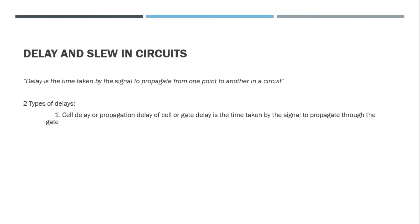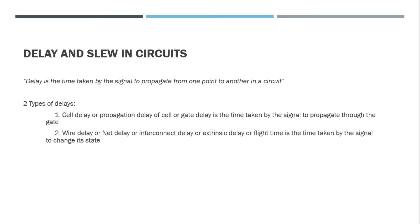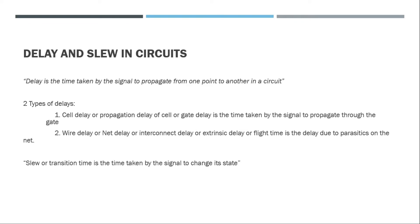The time the signal takes to traverse through the cell is called cell delay. With advancements in technology, we are able to reduce cell delay by reducing cell size, so in modern technology nodes the contribution of cell delay is very less compared to wire delay. The second type is wire delay, also called net delay, interconnect delay, extrinsic delay, or sometimes flight time — because it takes some time to fly from one region of the chip to another.